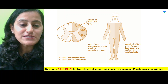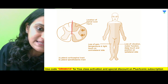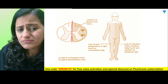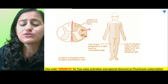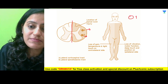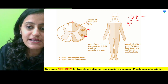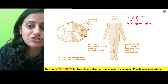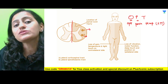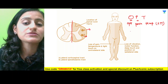Coming to Brown-Séquard syndrome — it is essentially a hemisection of the cord, where the tracts on one side are affected. The trick to remember what is lost on the opposite side is OPT. On the opposite side, pain and temperature are lost, carried by the spinothalamic tract, which crosses at the spinal level itself — so those deficits appear on the contralateral side.